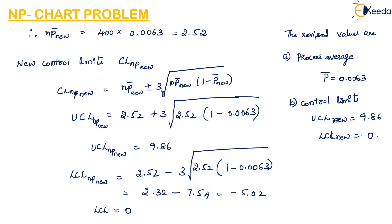This is all about the NP chart. We have computed the process average, drawn the chart, identified out-of-control points, and revised the process average and control limits. After the revised values, the process is brought under control. I hope you have understood the problem. Thank you.